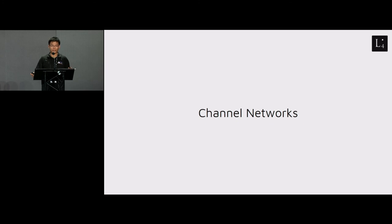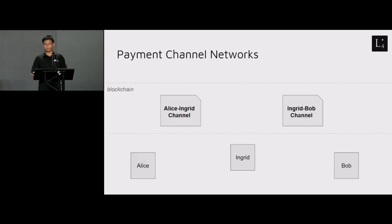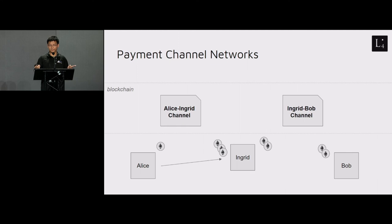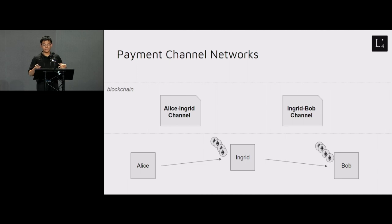The next thing is channel networks, specifically payment channel networks. The insight is this: consider a situation where we have an Alice-Ingrid channel on-chain and an Ingrid-Bob channel on-chain, but Alice and Bob have not opened a channel with each other. If Alice pays one ETH to Ingrid and then Ingrid pays one ETH to Bob, Ingrid's ownership hasn't changed, but Alice has effectively transferred one ETH to Bob. We can keep doing this in a trustless way.